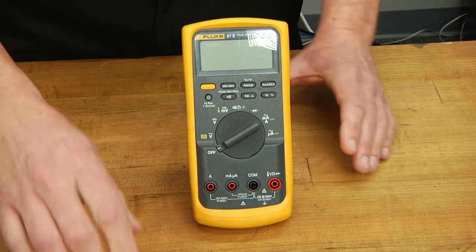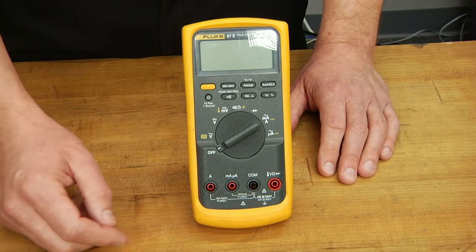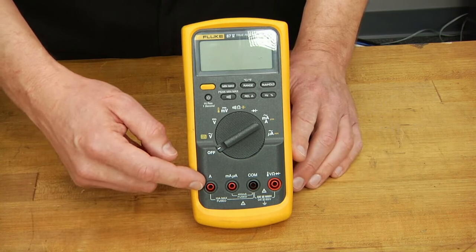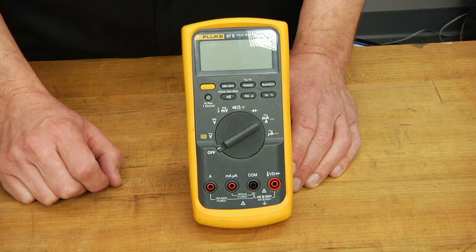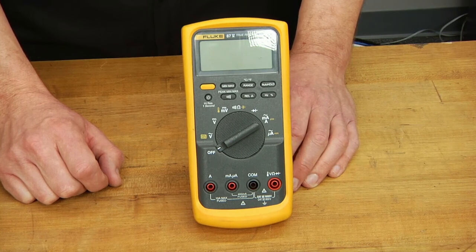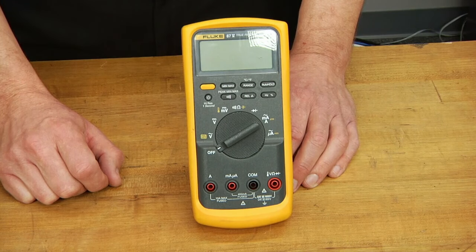Let's talk about the fuses. The two fuses are a 10 amp fuse to protect the amp terminal and a 400 milliamp fuse to protect the milliamp microamp terminal. If you exceed those ratings, the fuse will blow and the meter will not work.